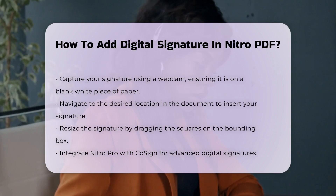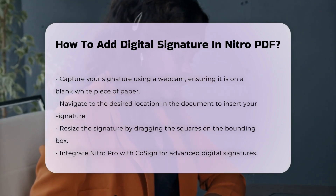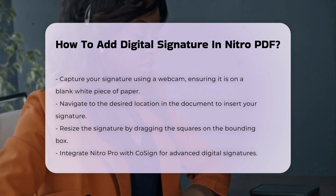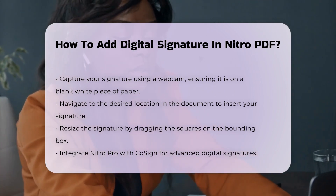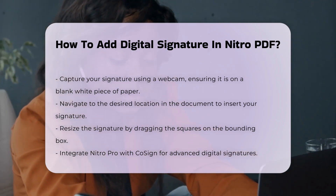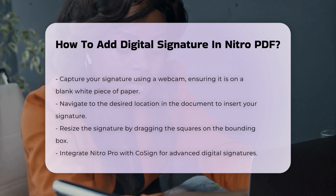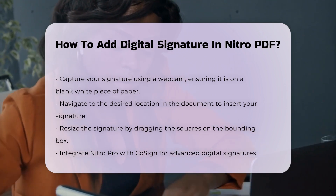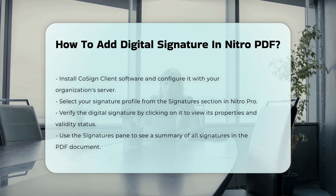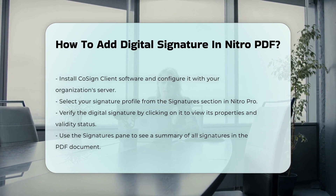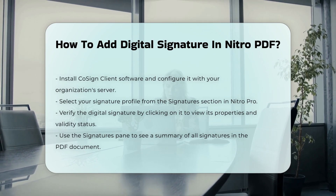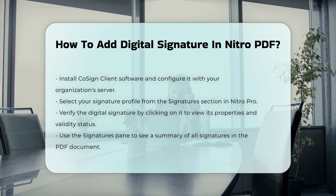Digital Signatures with Cosign. For more advanced and secure digital signatures, Nitro Pro can be integrated with Cosign. This involves installing the Cosign Client software and configuring it with your organization's Cosign Central Server or Cosign Cloud. You then select your signature profile from the Signatures section of the ribbon in Nitro Pro and place it in the desired area of the document.